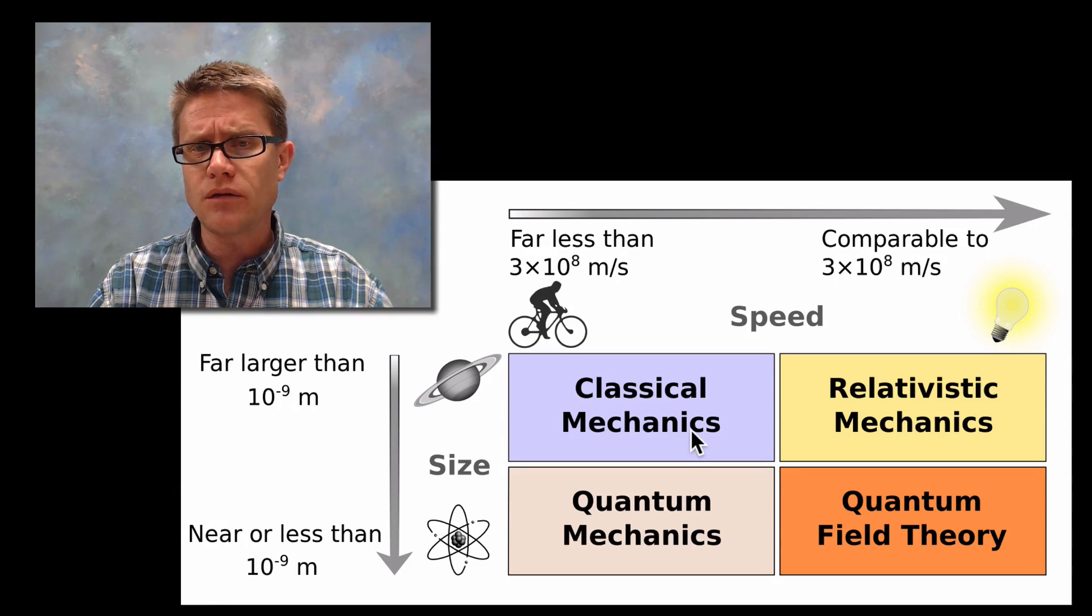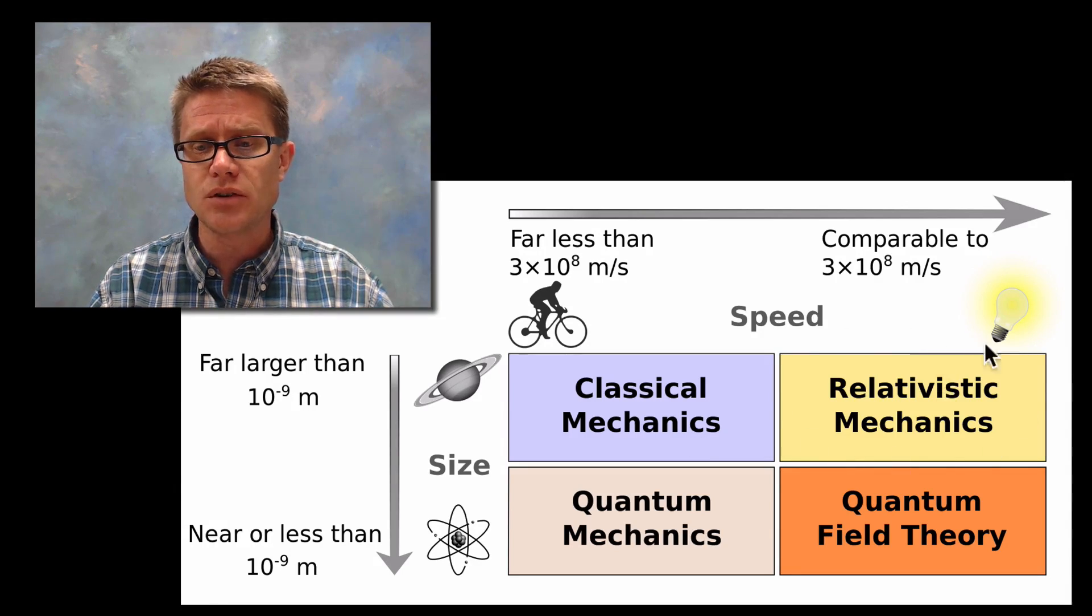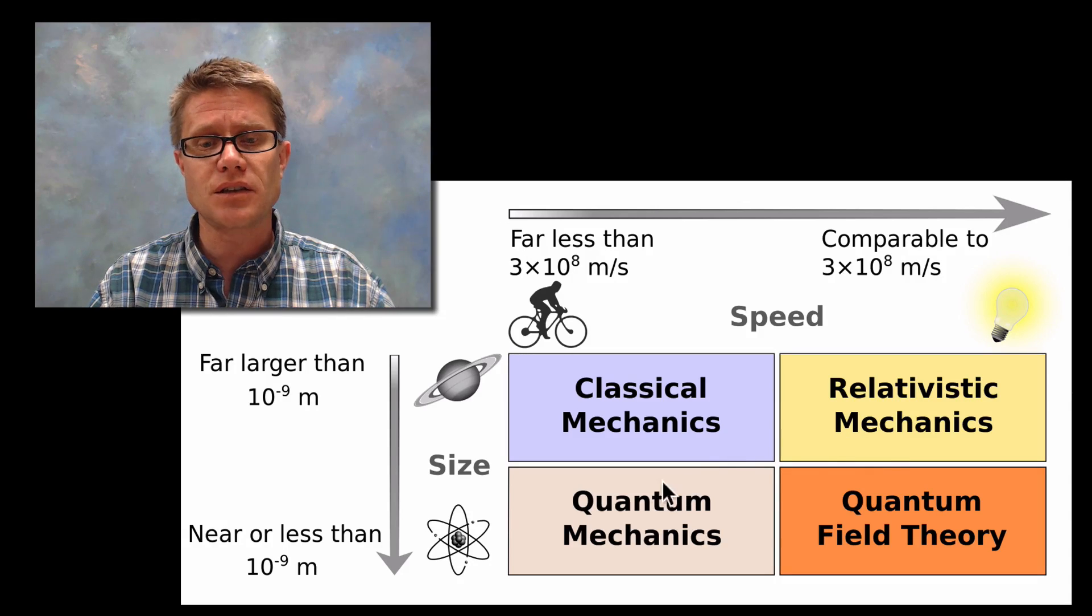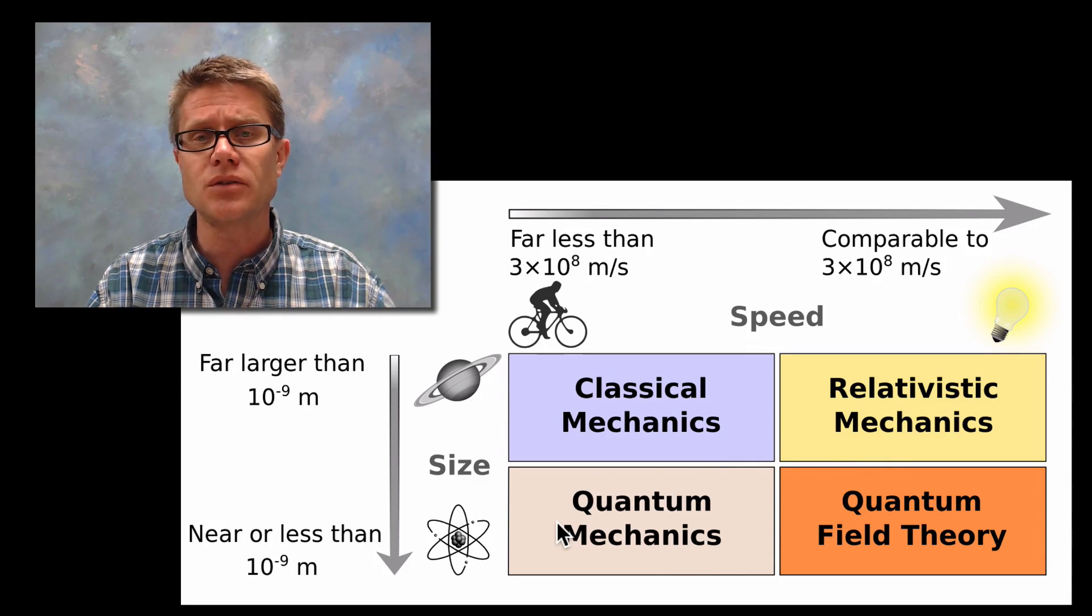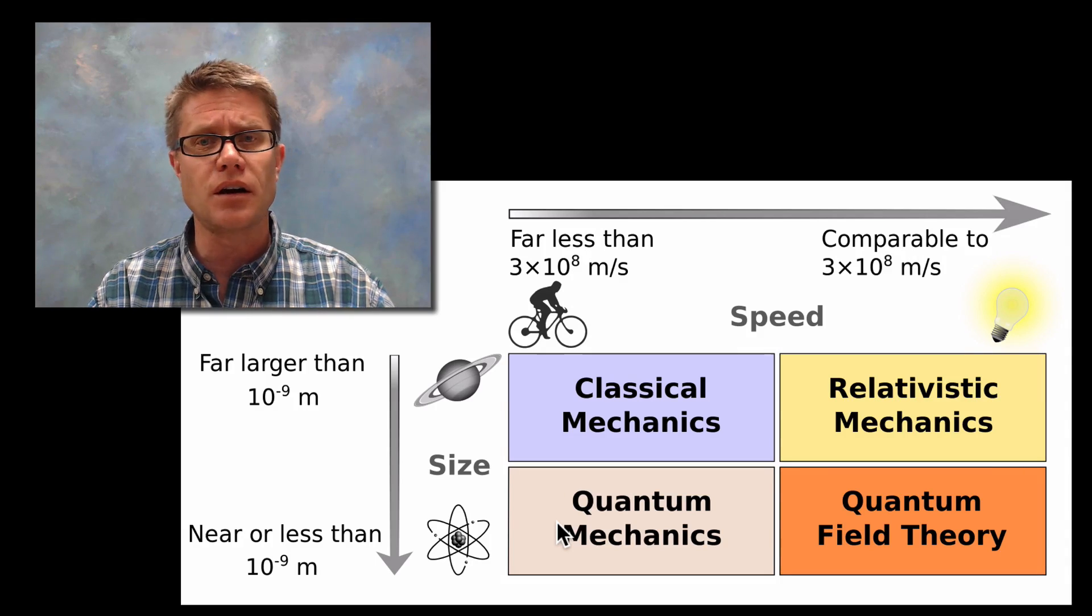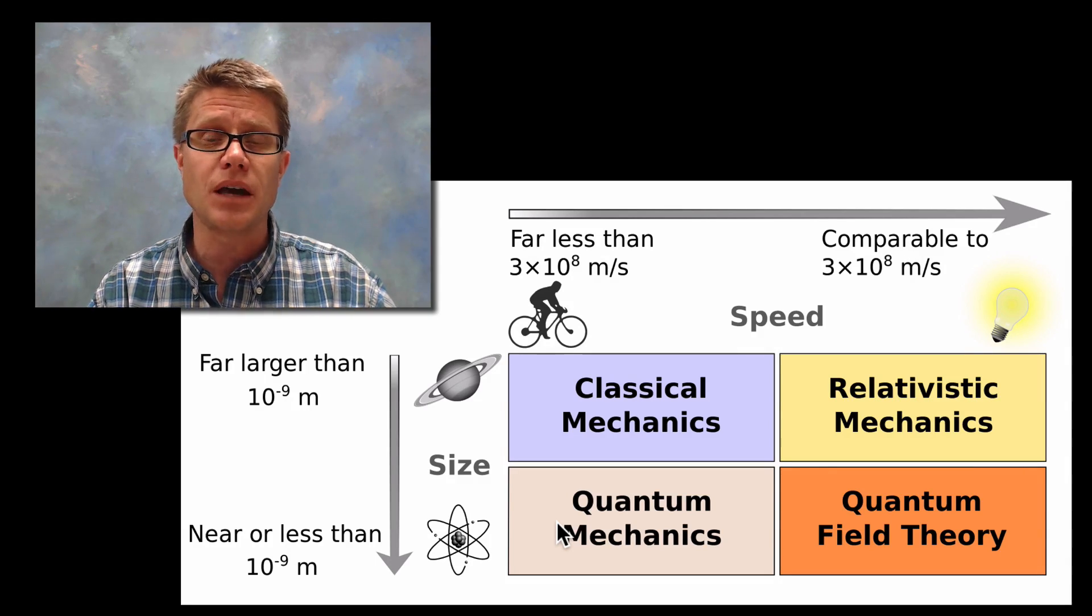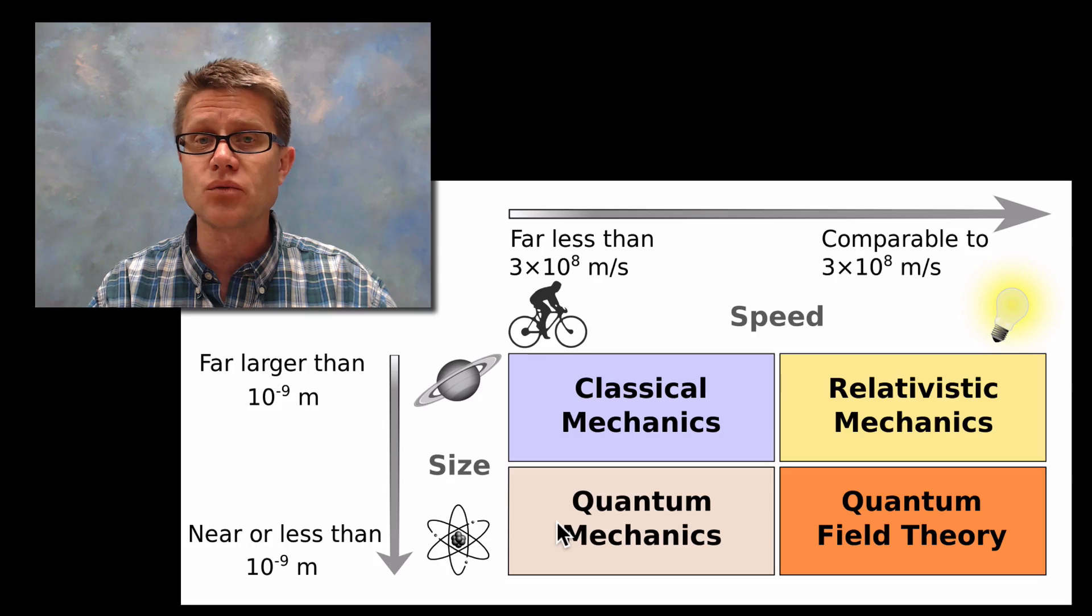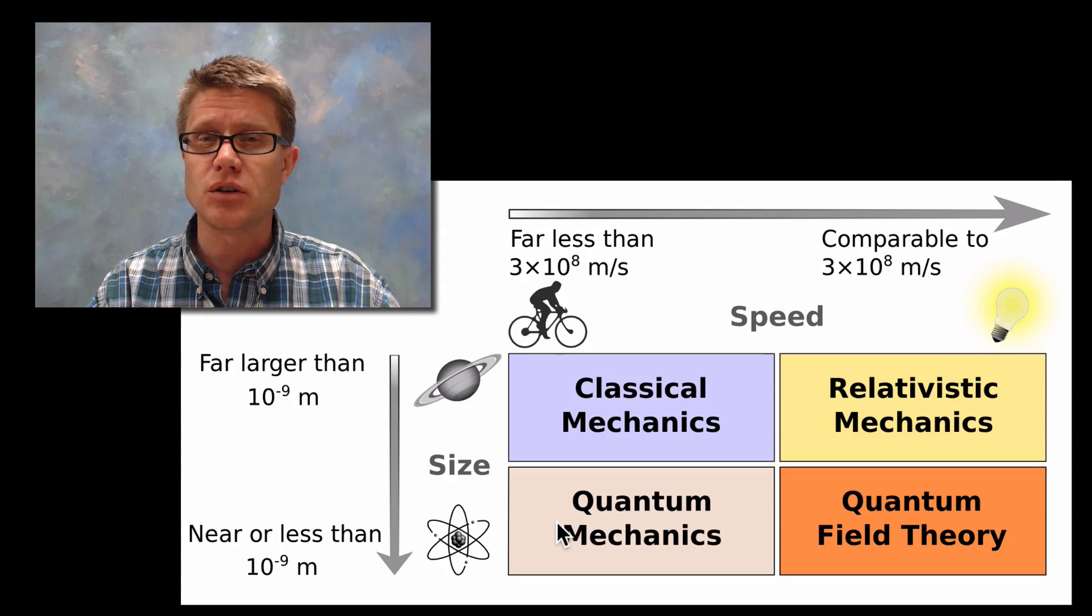That as things get really, really fast we have to adjust and use relativistic mechanics. And as things get really, really small we have to use quantum mechanics. And so the double slit experiment doesn't work in our classical mechanics world. But it does work in the world of the very, very small.